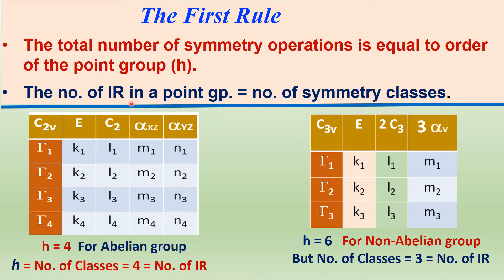Then, the number of irreducible representations equals the number of symmetry classes. In C2V, there are four symmetry classes — E, C2, sigma XZ, sigma YZ — therefore there are four irreducible representations. The total number of irreducible representations in a group is equal to the number of symmetry classes. Each symmetry operation forms a separate class here.